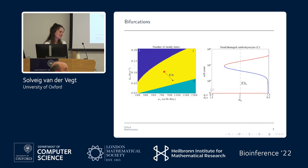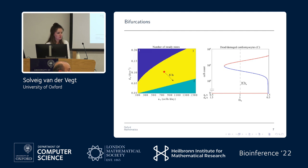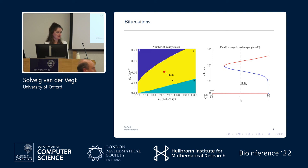Final question: when generating the profile likelihood, as you move along the profile curve fixing one parameter at each step and optimizing the others, did you use the optimal values from the previous step as starting points for the next? The speaker confirms they do exactly that, as it helps with computational efficiency. The session is then concluded with thanks to the speaker.